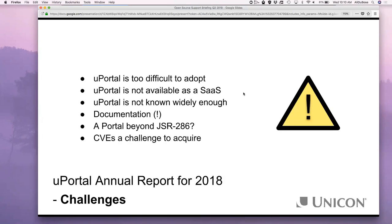There's a lot of good stuff in there, but I wanted to highlight the challenges documented in that report. In particular, uPortal is too difficult to adopt. uPortal 5 has made strides to make it easier — as someone who switches back and forth between uPortal 4 and 5, things are a lot easier in uPortal 5, but there's still room for improvement. Another item was that uPortal is not available as a SaaS.